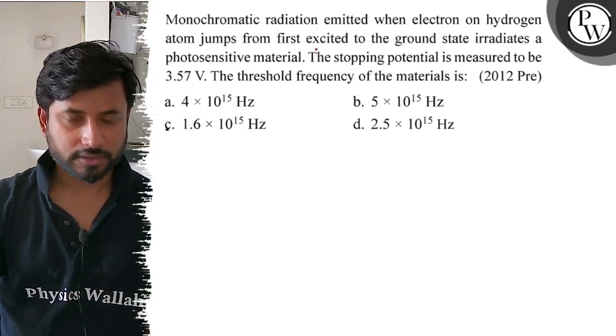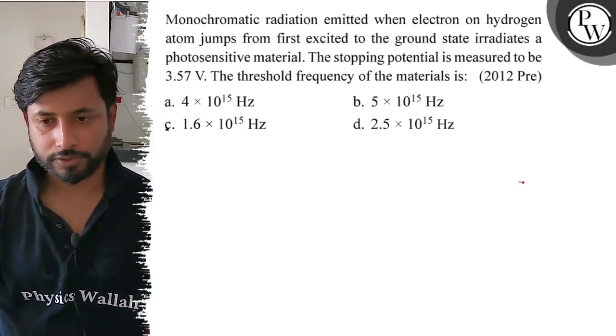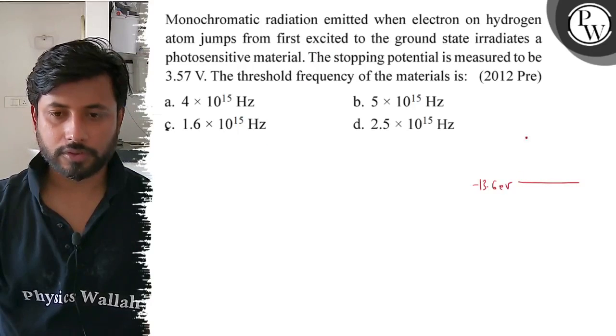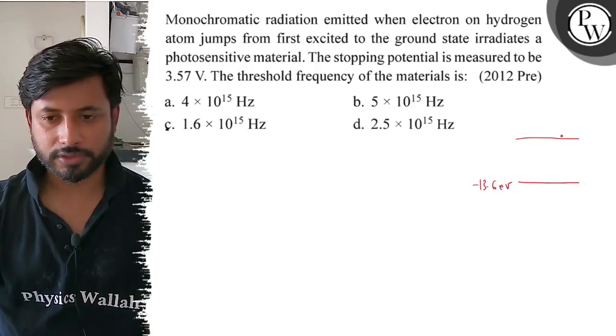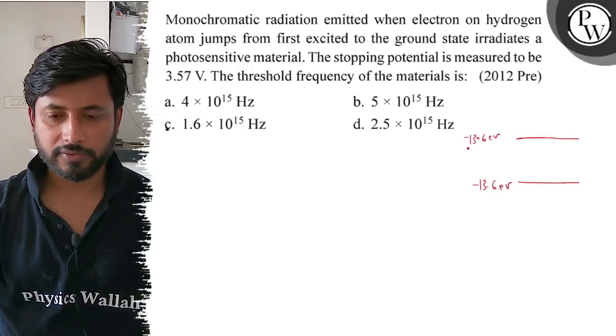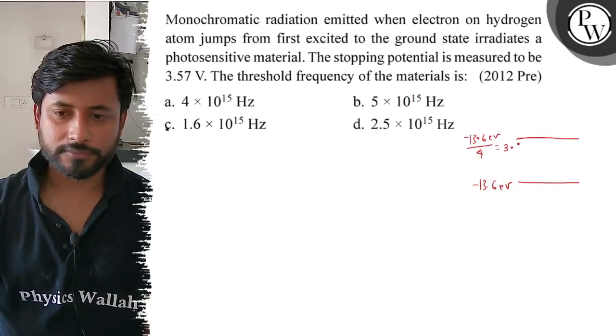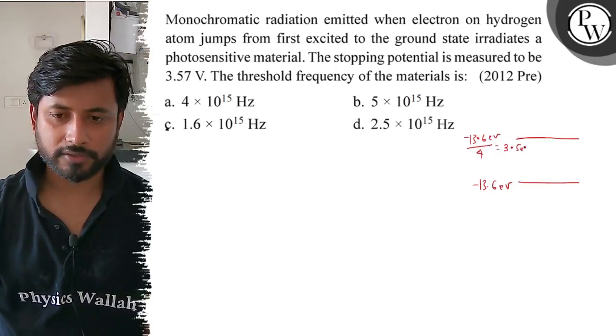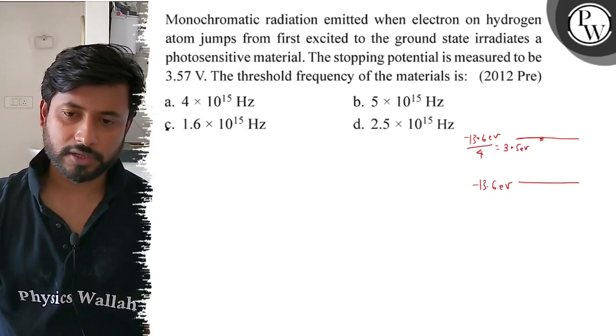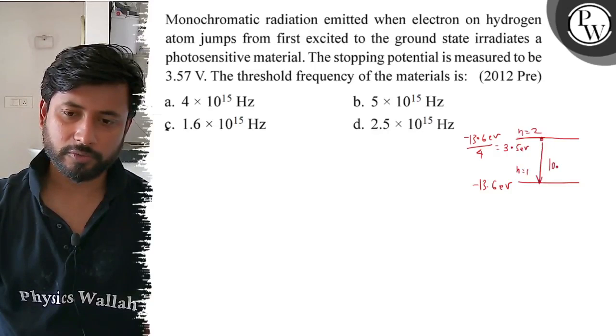First excited state to ground state jump. So first excited state has energy -13.6 electron volt divided by 4, which is -3.4 electron volt. The transition from n equals 2 to n equals 1 releases about 10.2 electron volt.